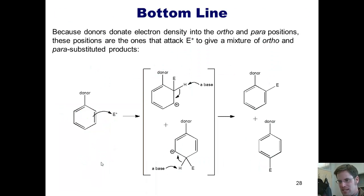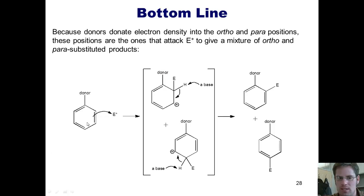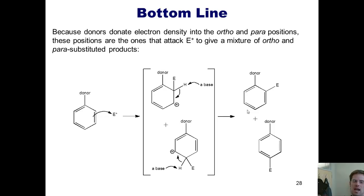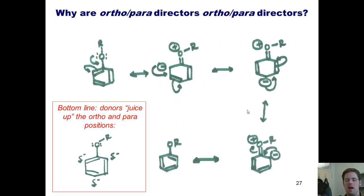To recapitulate: because ortho-para directors place partial negative charges on the ortho and para positions through resonance, these positions are the juiciest. Hence, those are the positions that will attract E+ during an electrophilic aromatic substitution, which is why an ortho-para director gives a mixture of ortho and para products. You might ask: do I want you to be able to explain why ortho-para directors are ortho-para directors on an exam? The answer is yes, and you had best be able to draw all of these resonance structures and use them in your explanation.